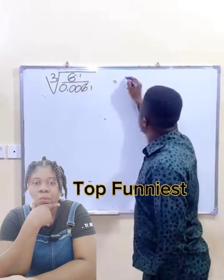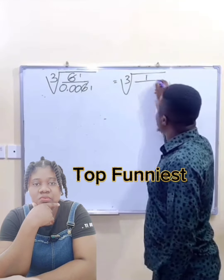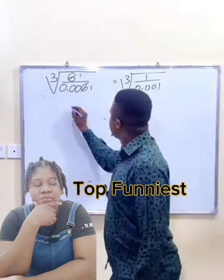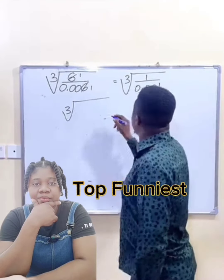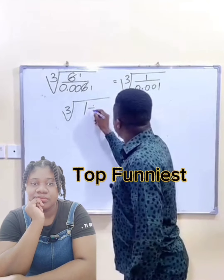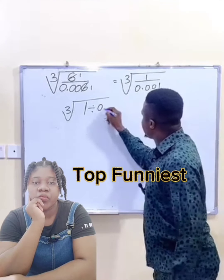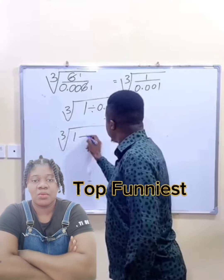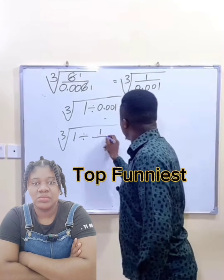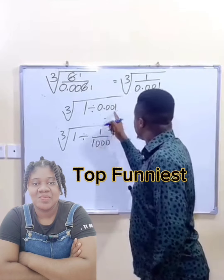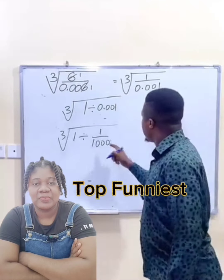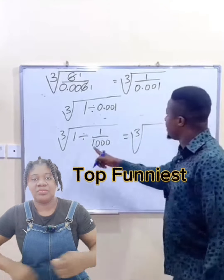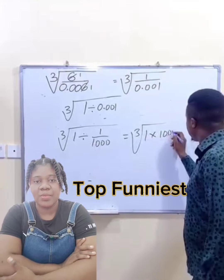So we have the cube root of 1 over 0.001. This is the same as the cube root of 1 divided by 0.001, which is also the cube root of 1 divided by — this can be written as 1 over 1,000. And 1 divided by 1 over 1,000, because changing division to times, you have 1,000 over 1.